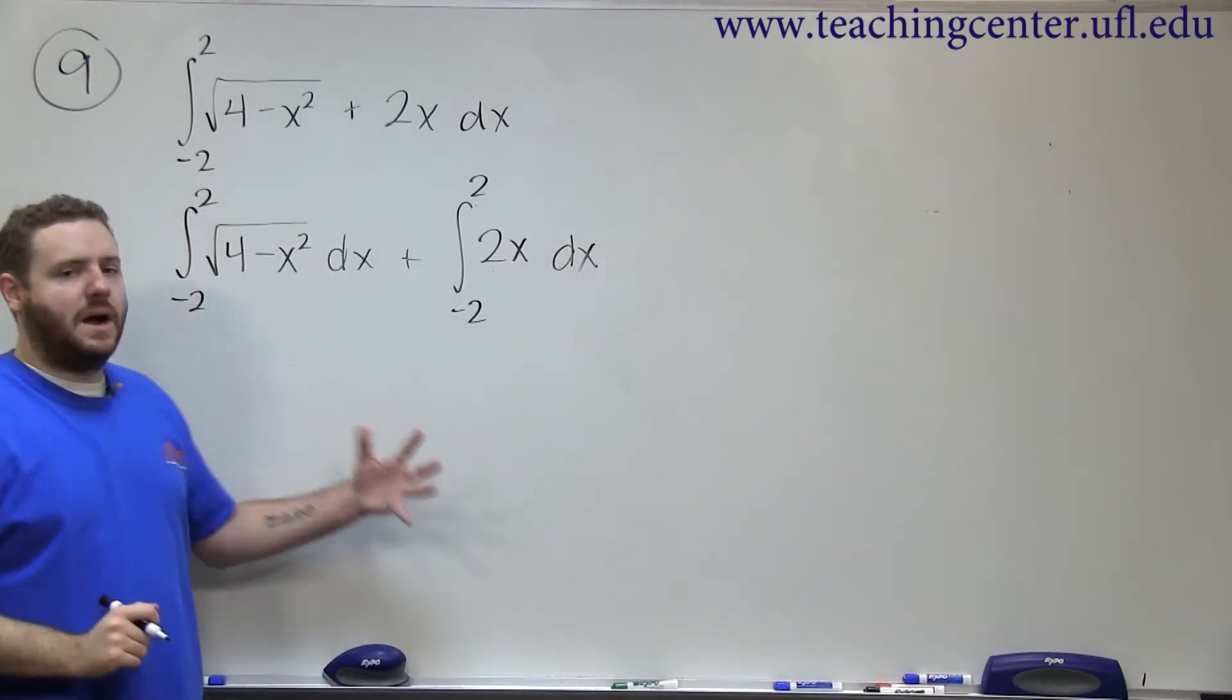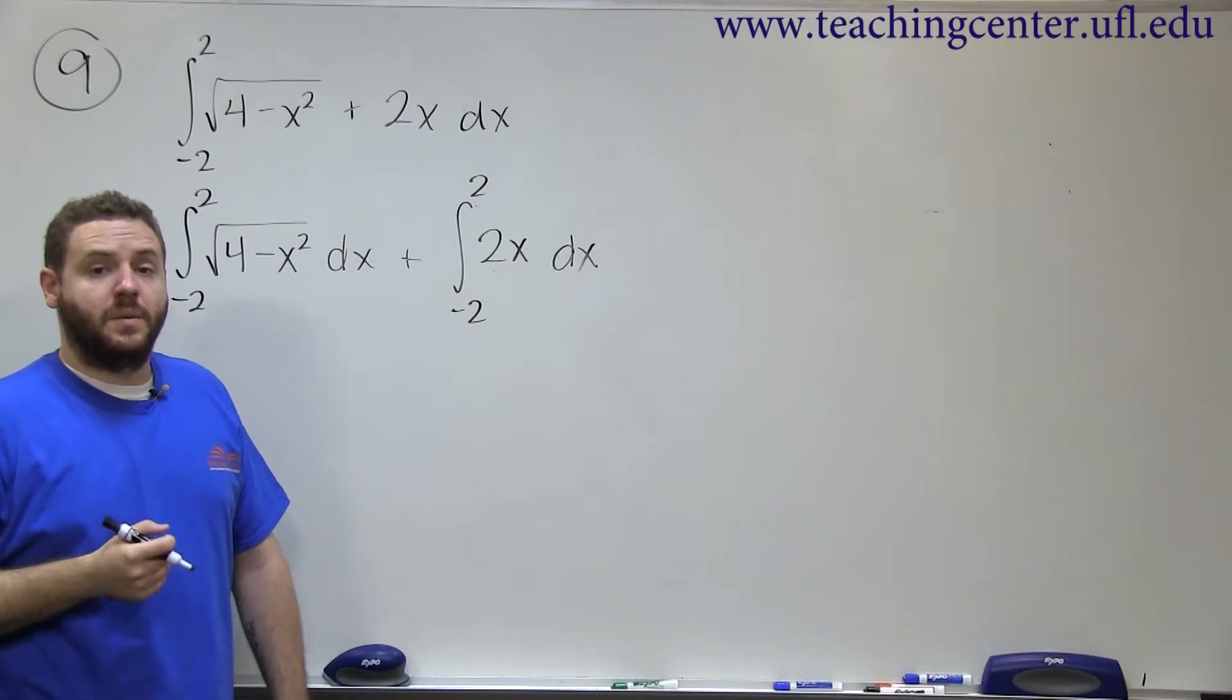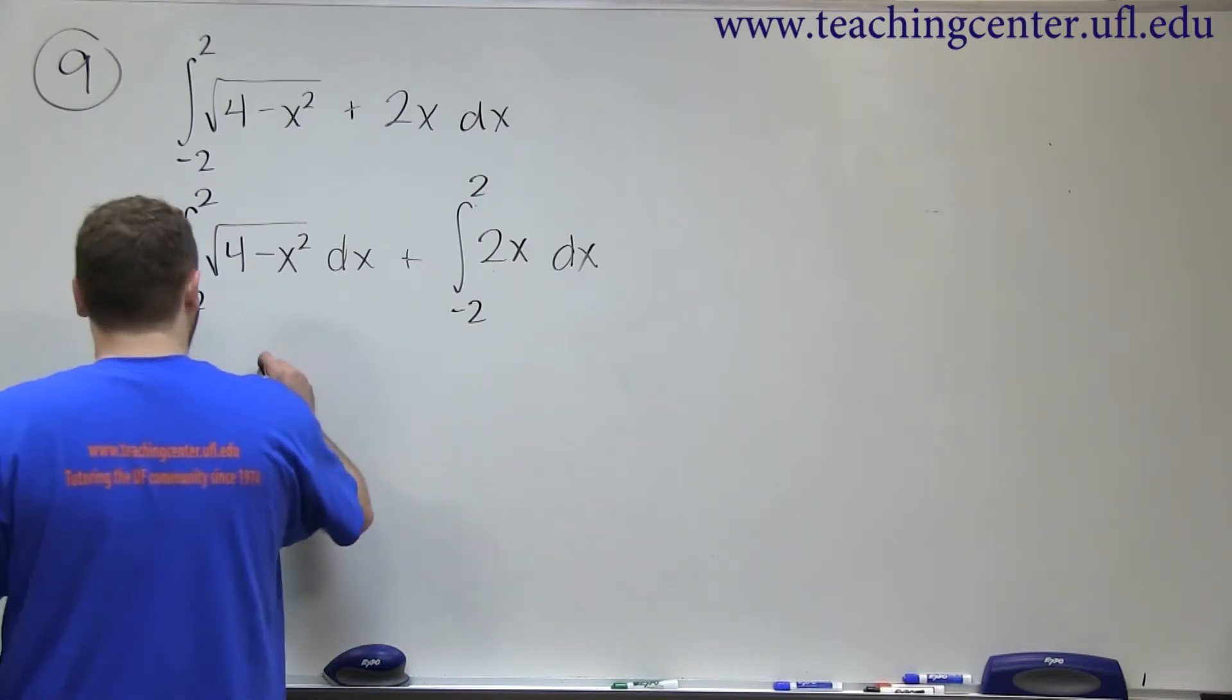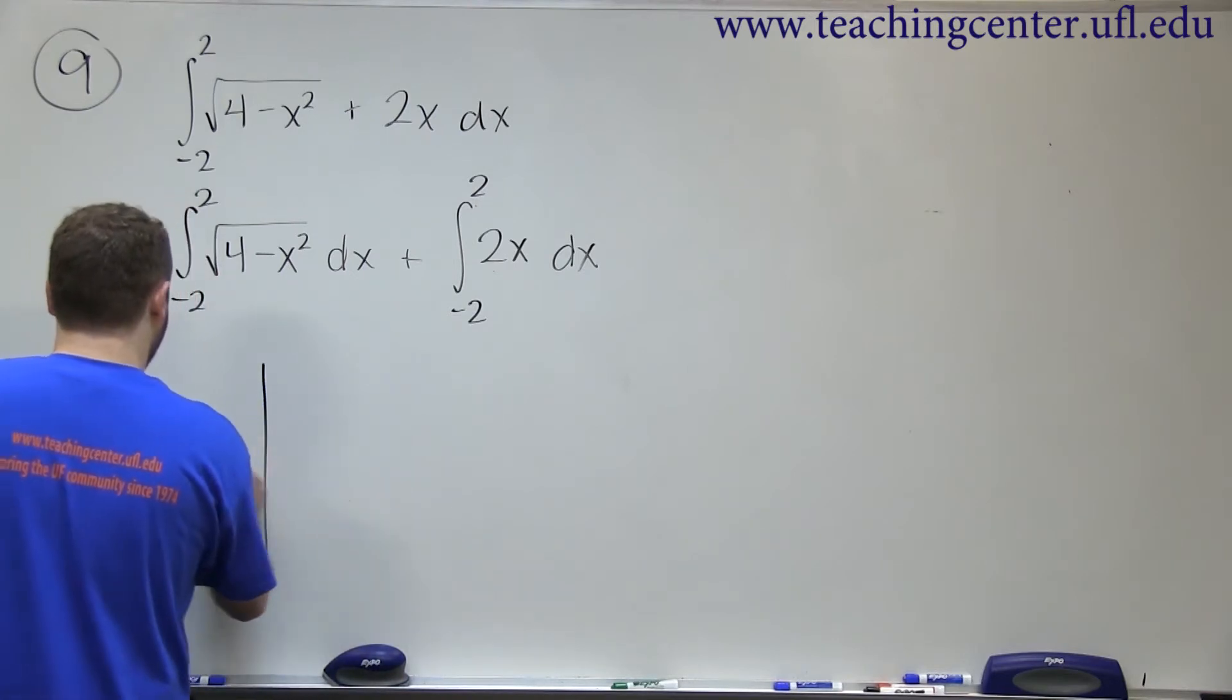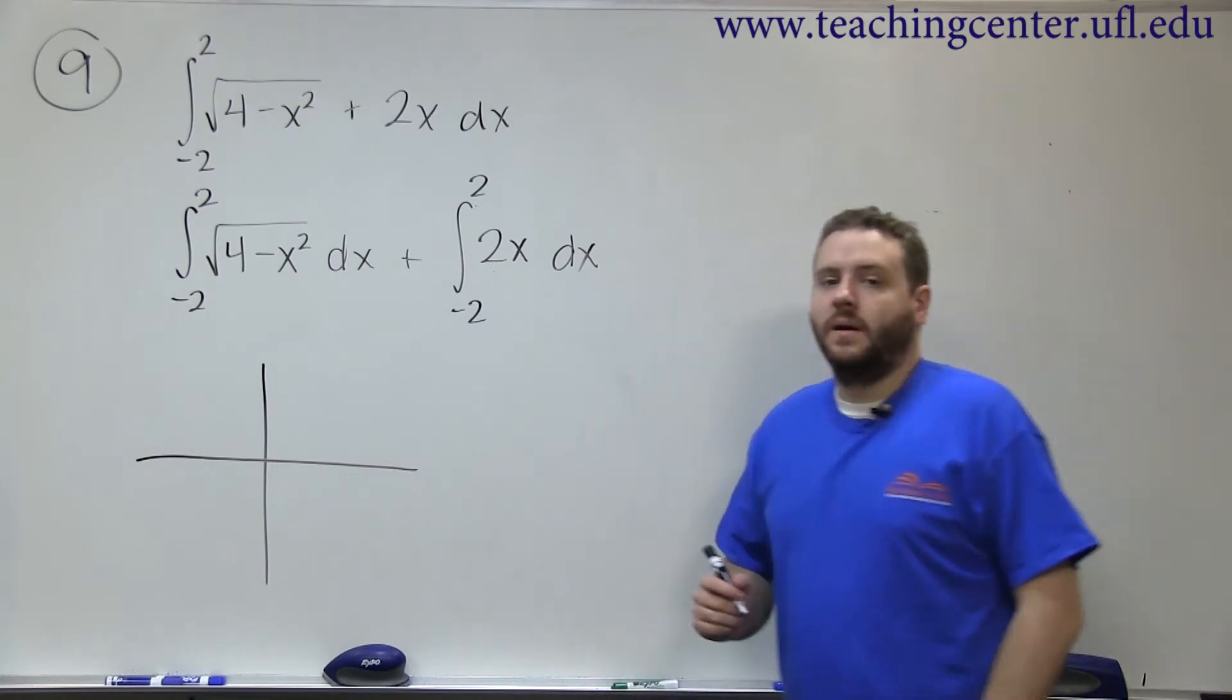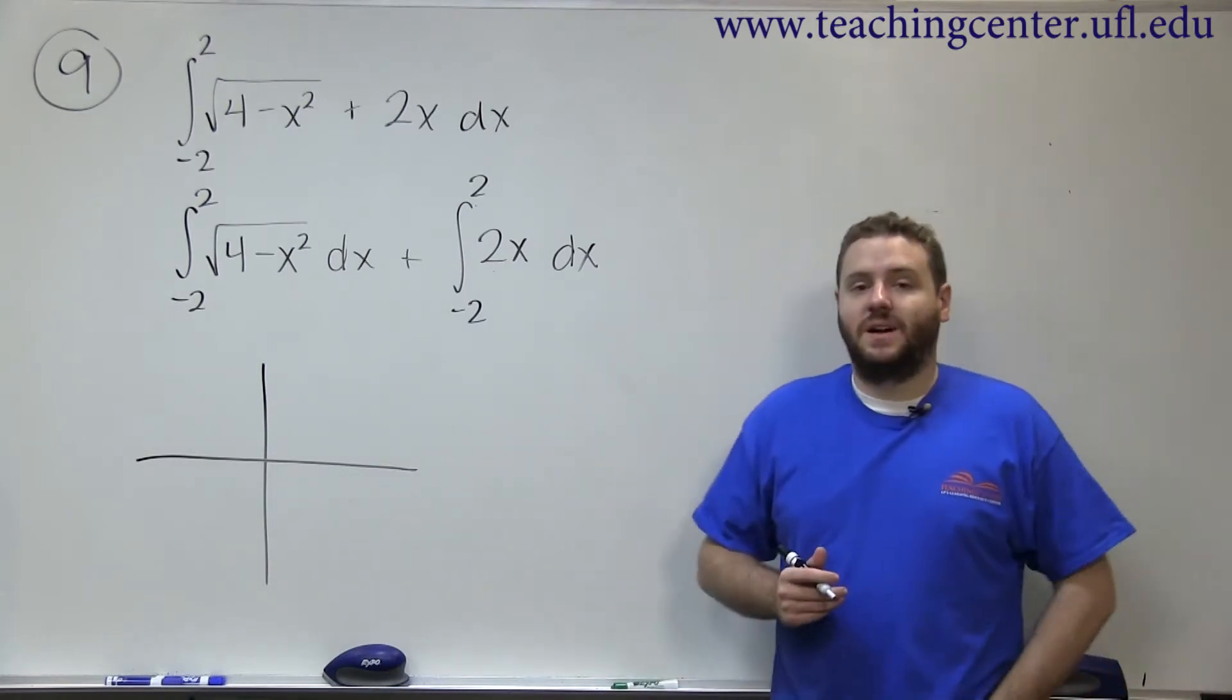So instead of calculating the antiderivative, we're going to think about this graphically. This first part, square root of 4 minus x squared, you should recognize that whenever you have a square root of a number minus x squared, that graph always looks like the top half of a circle.